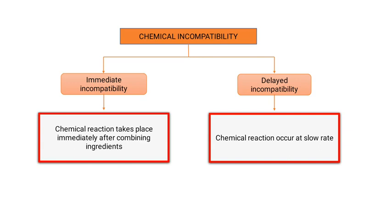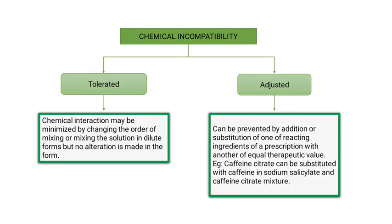The next classification of chemical incompatibility is divided into tolerated and adjusted. Tolerated means the chemical interaction can be minimized by changing the order of mixing or mixing the solution in dilute forms, but no alteration — that is, no substitution of ingredients — can be used.